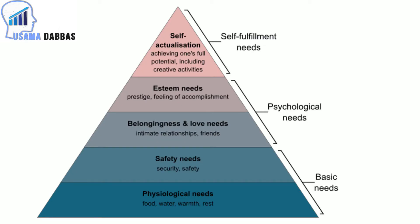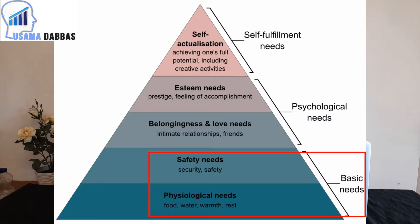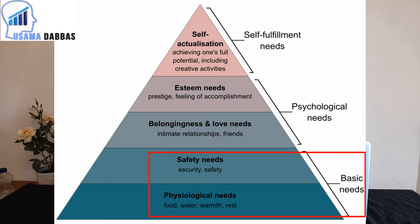In 1943, Abraham Maslow published the hierarchy of needs pyramid, in which he assigned all human needs into categories. The first category at the base is physiological or physical needs: water, food, warmth, and rest. The second level is safety needs: having shelter, property, and health.